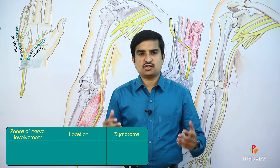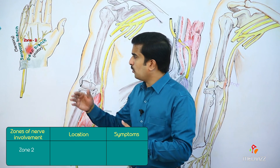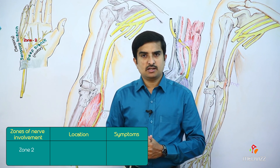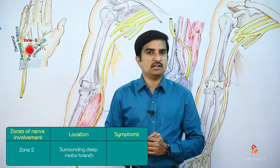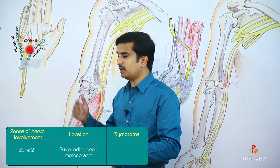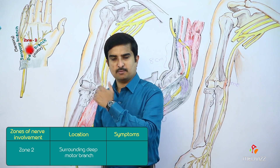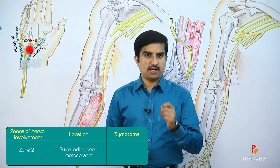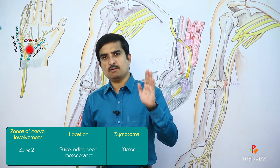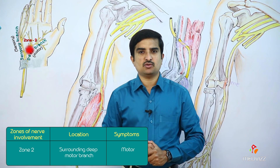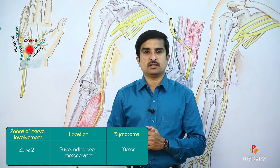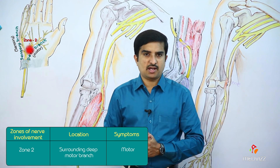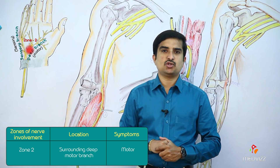Zone 2 means there is damage only to the motor branch, which means the deep branch of the ulnar nerve is involved. The deep branch is mainly motor and the superficial branch is sensory. Because of the injury to the motor branch, there are no sensory symptoms. Only the motor branch is involved, so all the muscles supplied by the motor branch are paralyzed. This is Zone 2 injury.